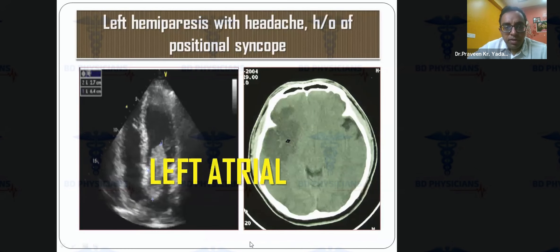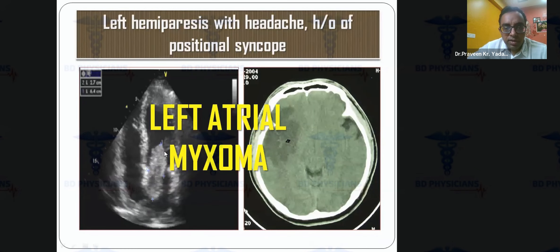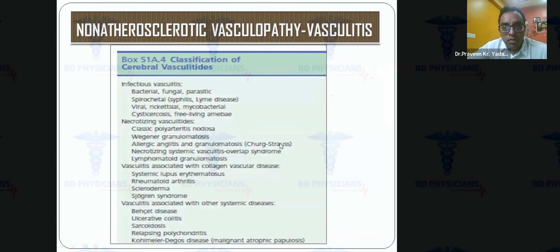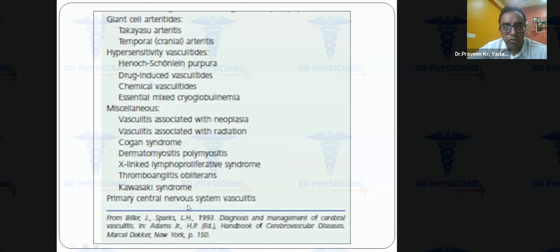Atrial myxoma is another cardiac cause — a large intracardiac lesion can embolize, causing stroke with a dense MCA sign on imaging. Vasculitis represents a large group including infectious vasculitis and secondary vasculitis from collagen vascular disease; detailed discussion of each type is beyond the scope of this overview.